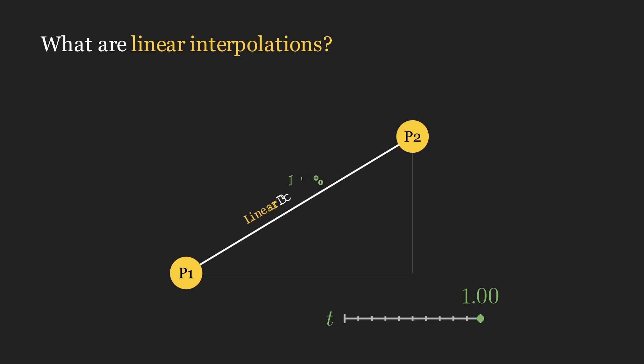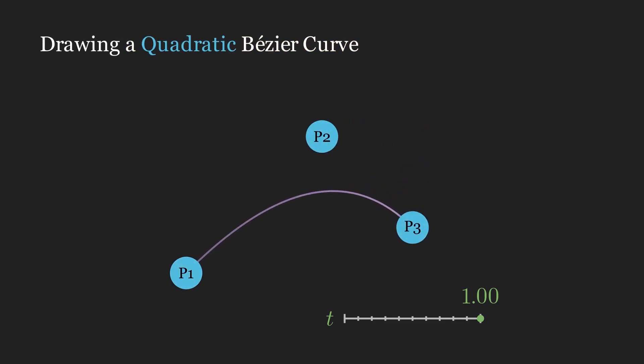A first-degree Bezier curve is the same as a linear interpolation between two points. But let's tackle something a bit more interesting. What's the logic behind creating a quadratic Bezier curve? All you need to do is take the linear interpolation of the linear interpolation.